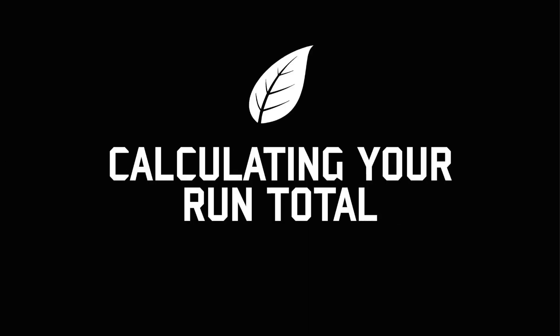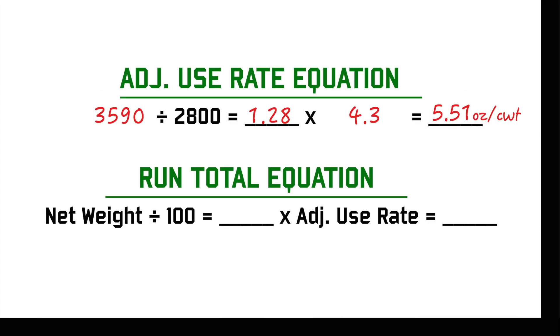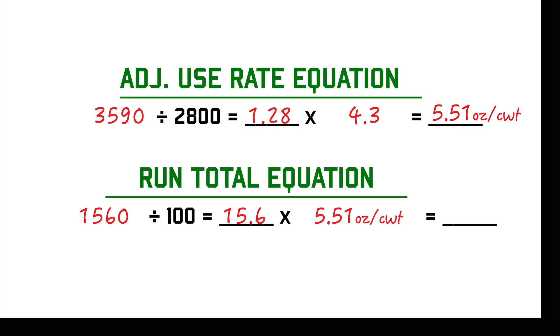Next, you'll determine your run total — the total amount of ounces of chemical and inoculant that will be applied to one pro box of seed. To get this, divide your net weight by 100, then multiply your answer by your adjusted use rate. This will give you your run total.